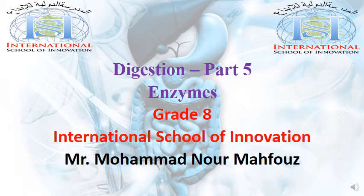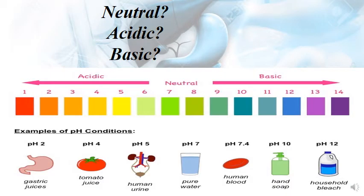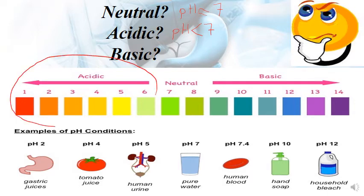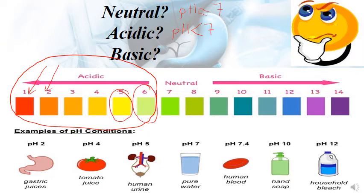Hello grade 8 students. In this video we're going to continue with our digestion chapter, part 5, talking about enzymes. First, let's remember neutral, acidic, and basic. Neutral pH is approximately 7, ranging between 6.5 and 7. Acidic is where the pH is less than 7 — moving away from 7 gives a stronger acid, for example pH 1 and 2 are strong acids while 5 and 6 are weak acids.